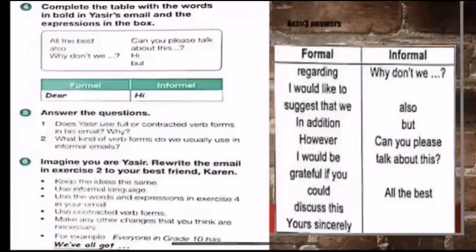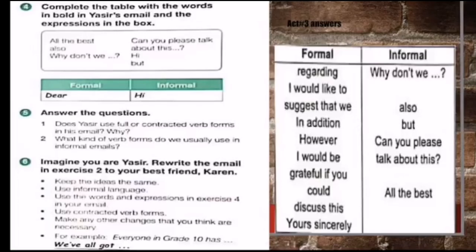Activity number four: complete the table with words and expressions from Yusuf's email. You have to categorize them into formal and informal expressions. In formal expressions we have: 'regarding,' 'I would like to suggest that,' 'in addition,' 'however,' 'I am,' 'I would be grateful if you could,' and 'yours sincerely.' In informal expressions we have: 'why don't we,' 'also,' 'but,' 'can you please talk about this,' and 'all the best.'